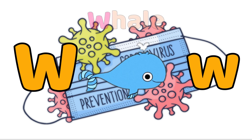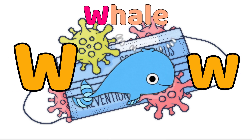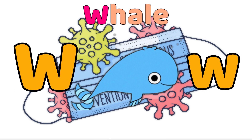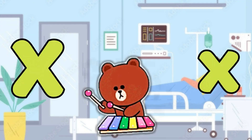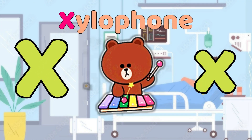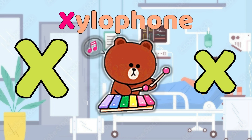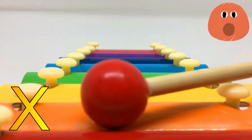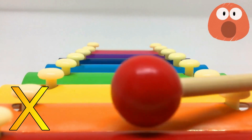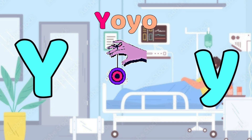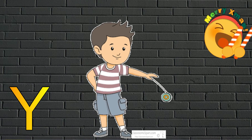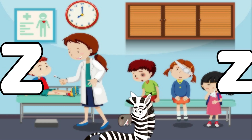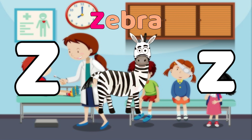W is for Whale. W, Whale. W, Whale. W, Whale. X is for Xylophone. Z, Xylophone. Z, Xylophone. X, Xylophone. Y is for Yo-Yo. Y, Yo-Yo. Y, Yo-Yo. Y, Yo-Yo.